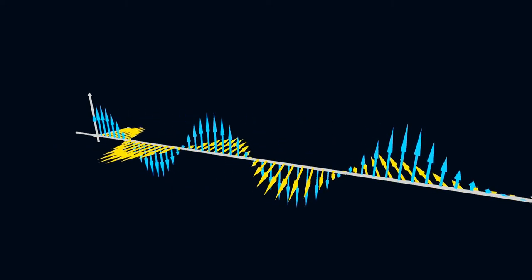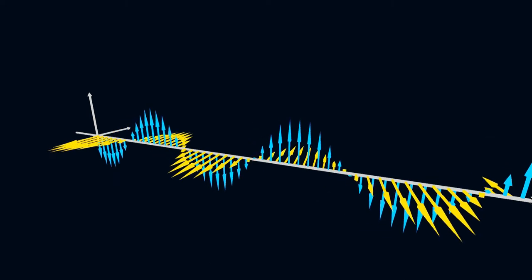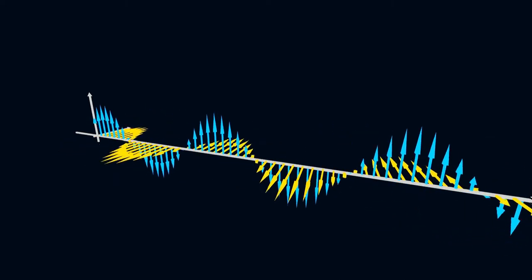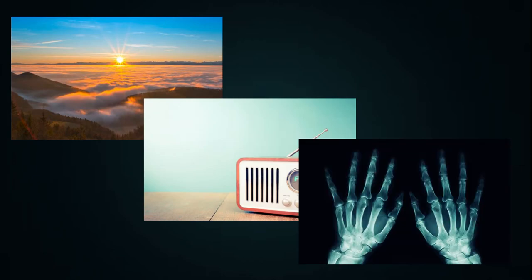This is electromagnetic radiation. This pure oscillation can explain phenomena like the light coming from the Sun, radio waves, X-rays, and so on. The electric field change induces a variation in the magnetic field, and the magnetic field change induces a variation in the electric field.